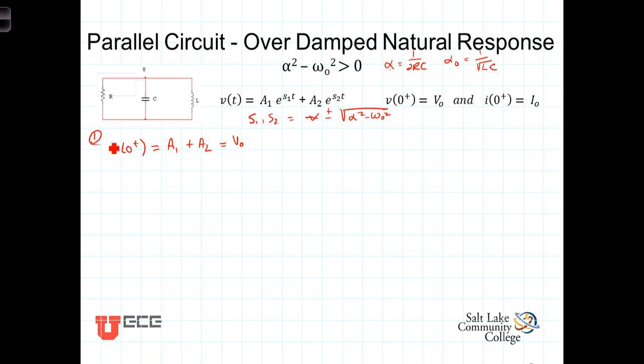The second equation is a little trickier. To get a second equation involving A1 and A2, we can differentiate this expression with respect to time: dv/dt = A1·S1·e^(S1t) + A2·S2·e^(S2t).